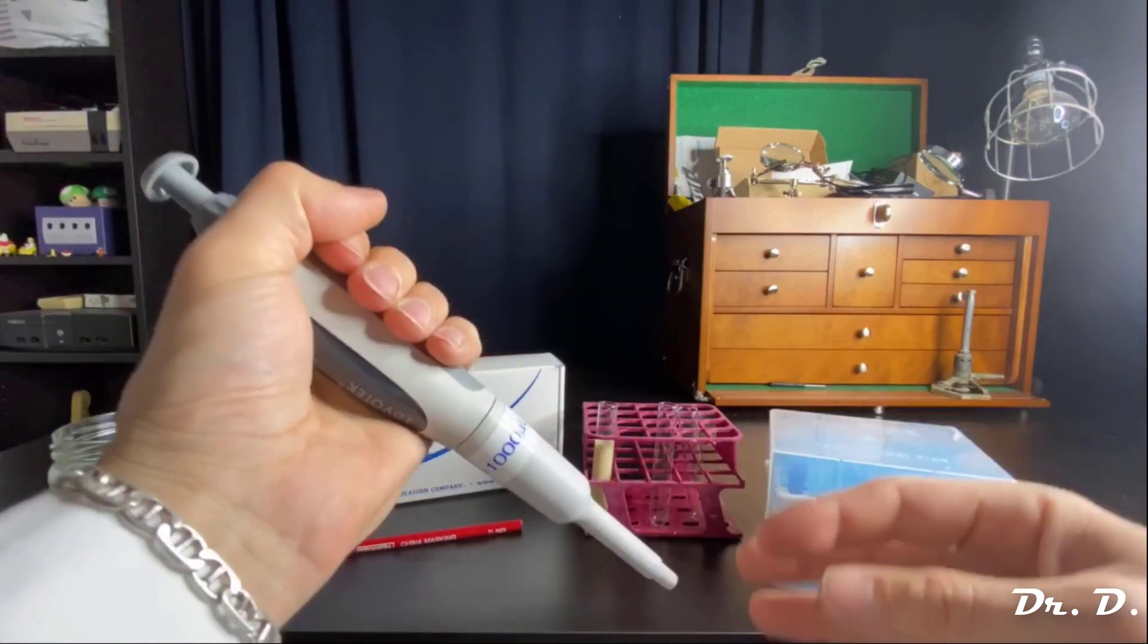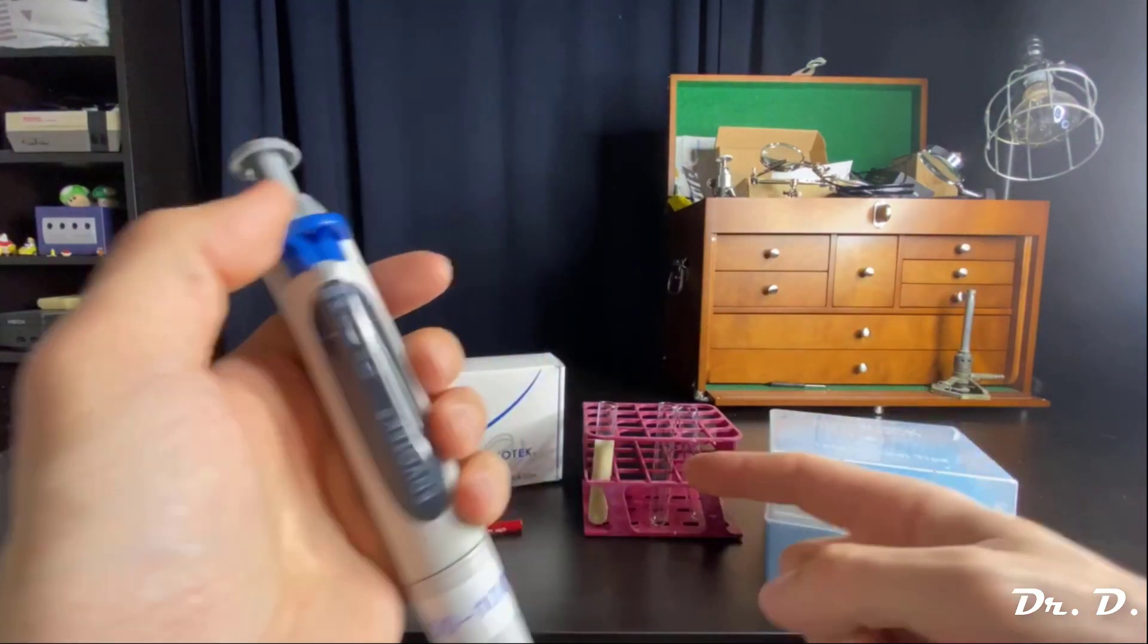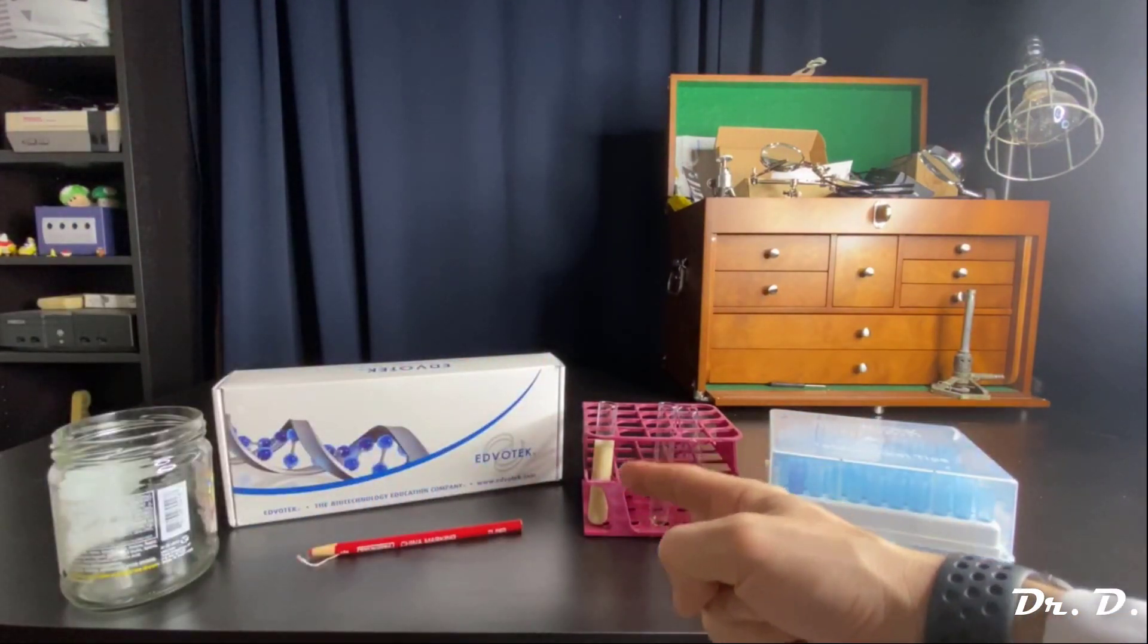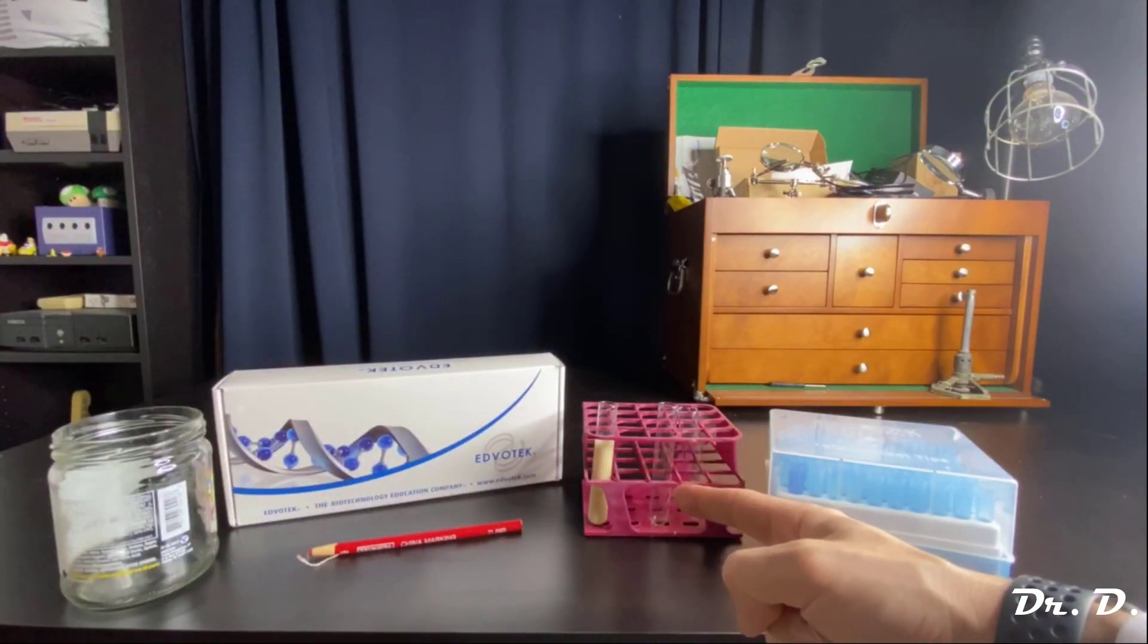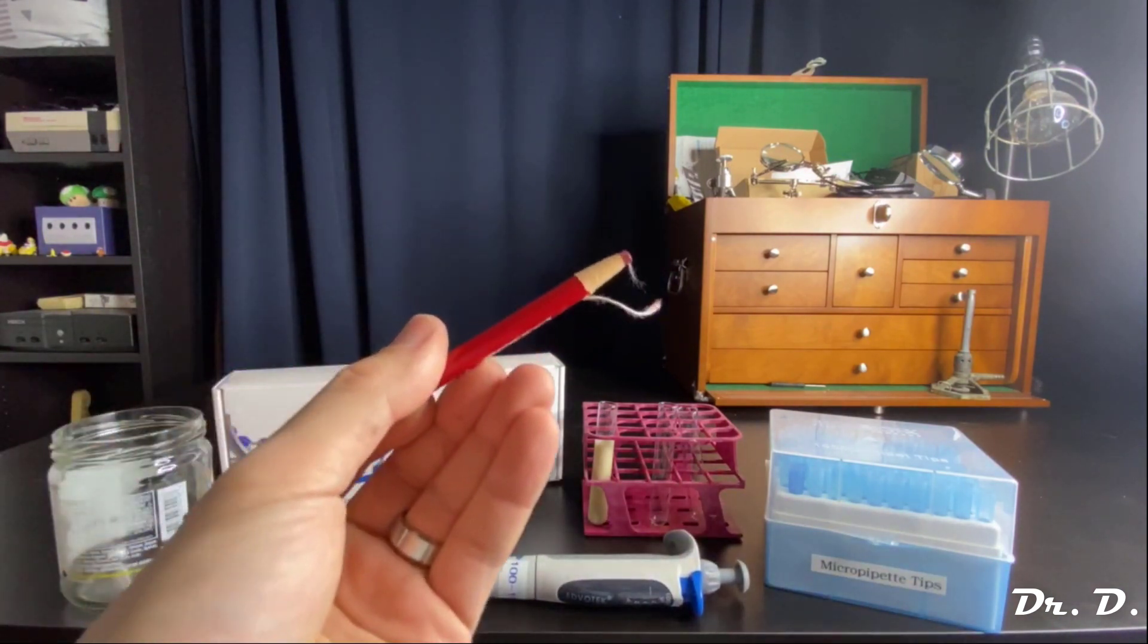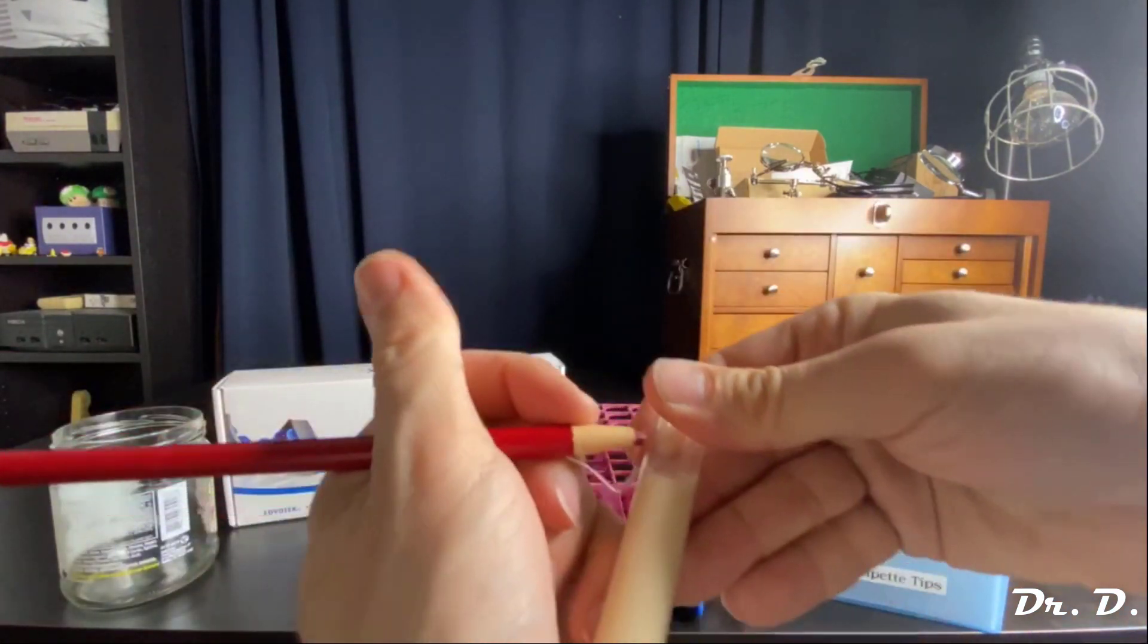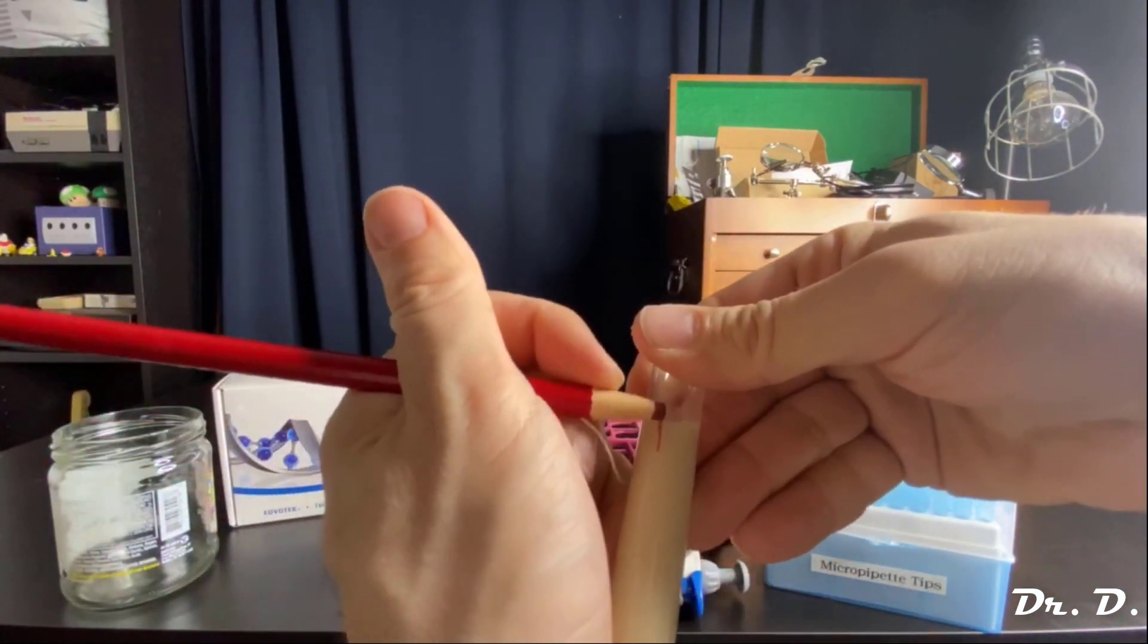Let me show you how to actually aliquot. Let's say I want to aliquot 500 microliters of this solution into another test tube. Don't forget, you can use china markers, which are essentially wax pencils, in order to write on test tubes.